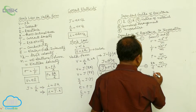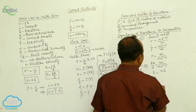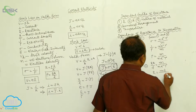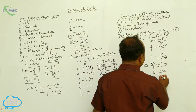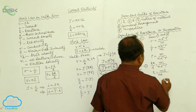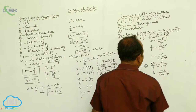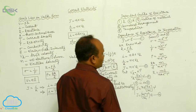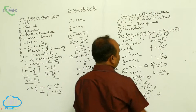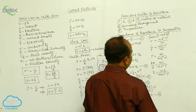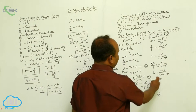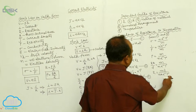Therefore R is equals to M L by N A e squared into tau.